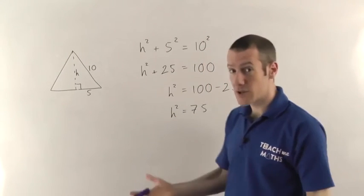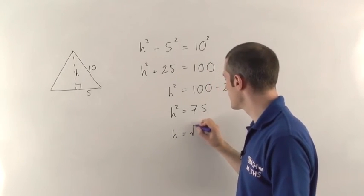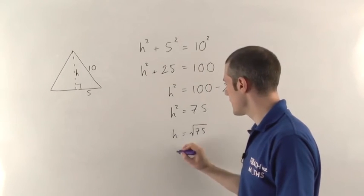So 100 minus 25 is 75. And again, we do square root to find the value of the length. So h will be the square root of 75.